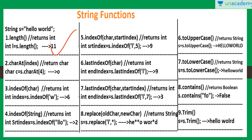The next function is charAt(). If we want to find the character at a particular index, we can use this function. Here I am using s.charAt(4). Indexing starts from 0, so at index 0 we have H, index 1 is E, index 2 is L, index 3 is L, and at index 4 O is present. So it will print O.